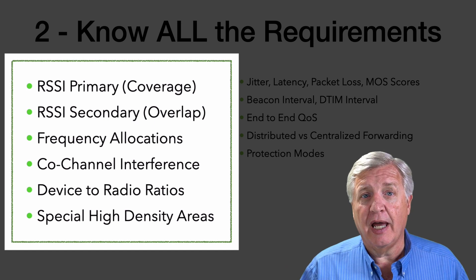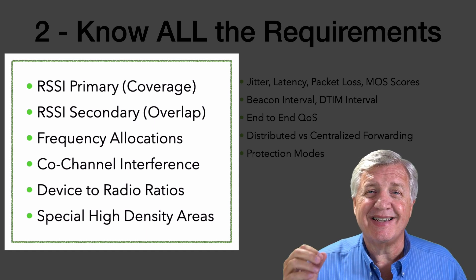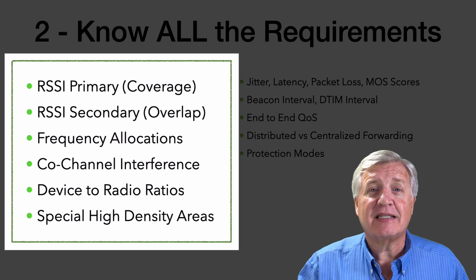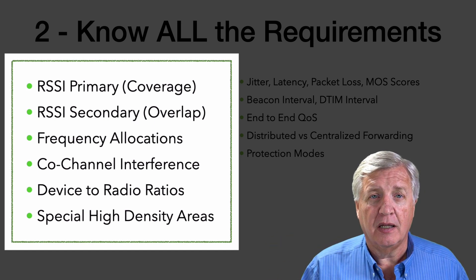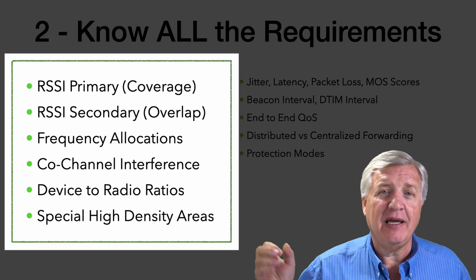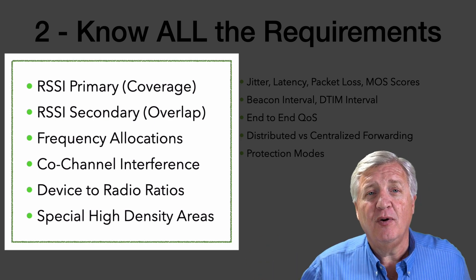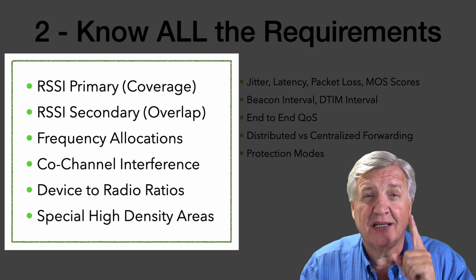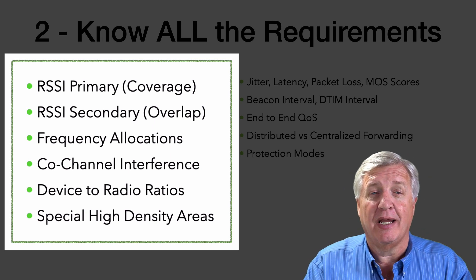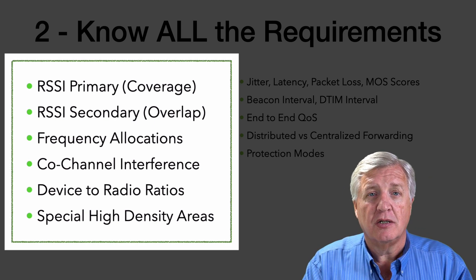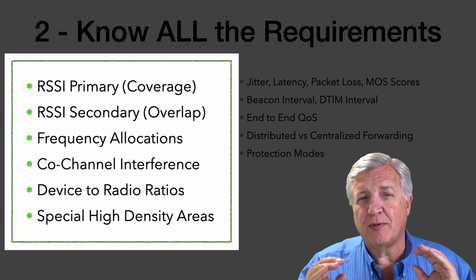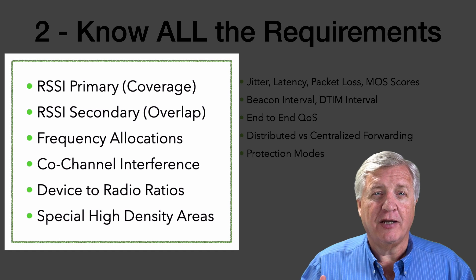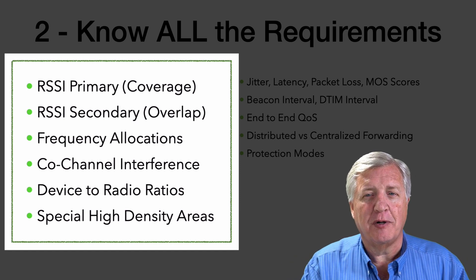Another thing we should look at is co-channel interference. We should design for it, measure for it, and validate it — it's the killer of Wi-Fi. If you have two APs on the same channel and they see each other, you have the capacity of one AP — actually a little less than one because they're sharing. Co-channel interference has to be a requirement. You design to it, you validate it, and you keep it as far away from your network as possible.